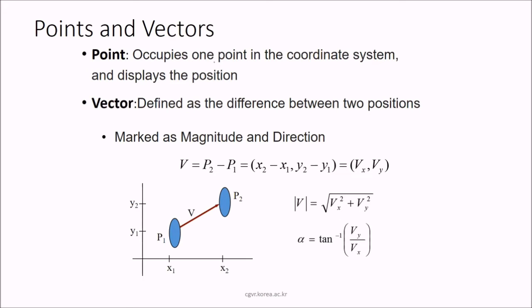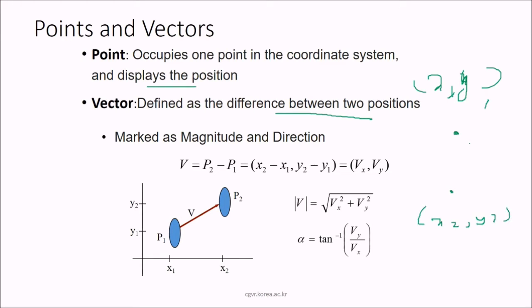A point is represented by coordinates (x, y) — it occupies one position in the coordinate system and displays that position. A vector is defined as the difference between two points. If we have point (x1, y1) and (x2, y2), then vx = x2 − x1 and vy = y2 − y1 give the magnitude and direction. Magnitude = √(vx² + vy²) and direction = tan⁻¹(vy/vx).